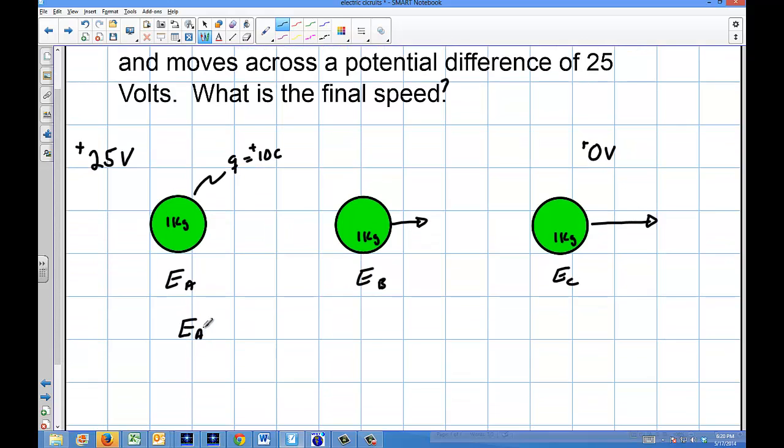So I basically can set the energy of A, the start here, this is the start, and I can take the energy of C, which is going to be the finish here, this is the finish, and I can set them equal.